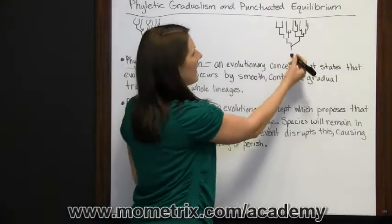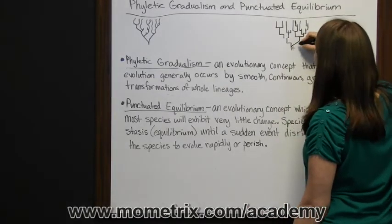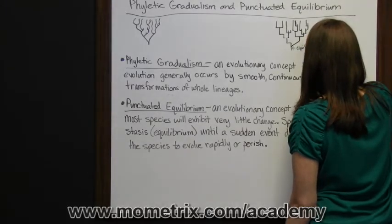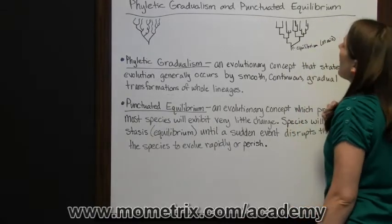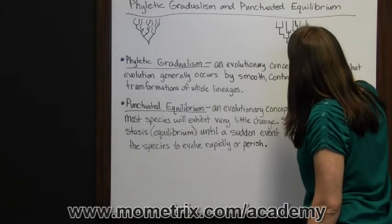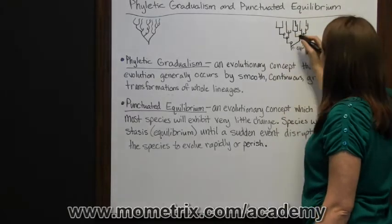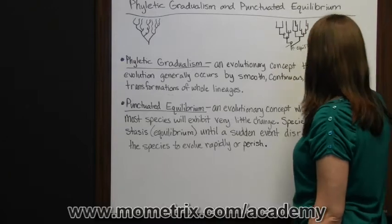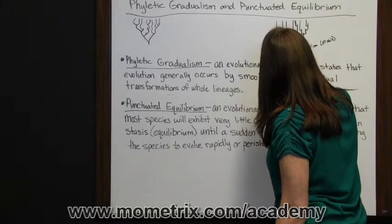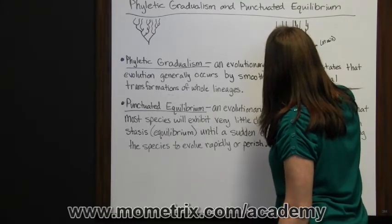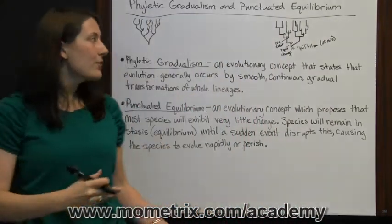That would look more like this diagram. In this diagram, any of these straight lines going up would represent equilibrium, or stasis as it is called in the theory, and then you've got these corners. Anywhere there's a corner, there was some event that caused things to change. These would be your punctuations — your punctuated equilibrium. This is where a rapid change would happen; some big event caused change, and then the rest of the time you've got stasis.